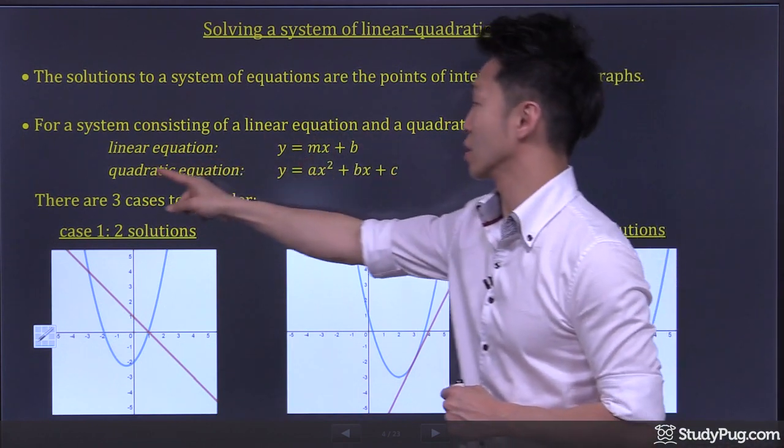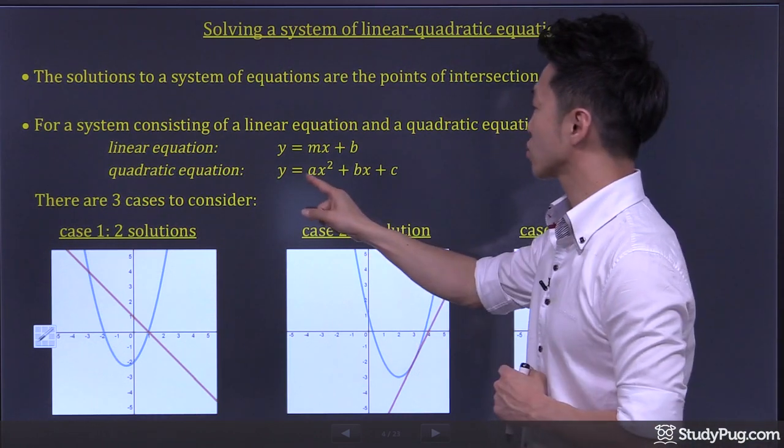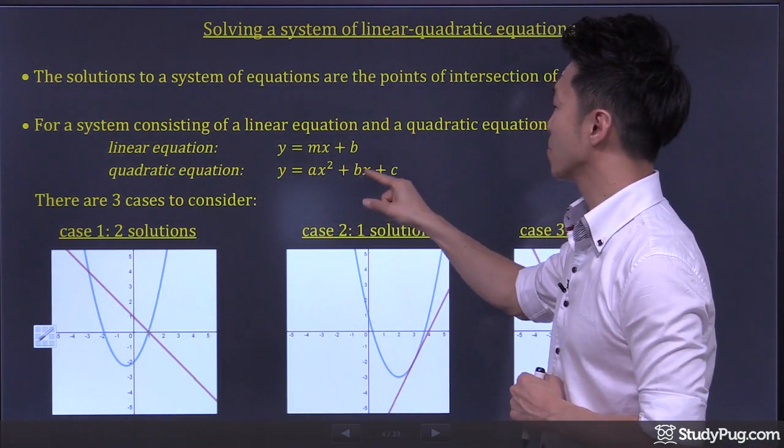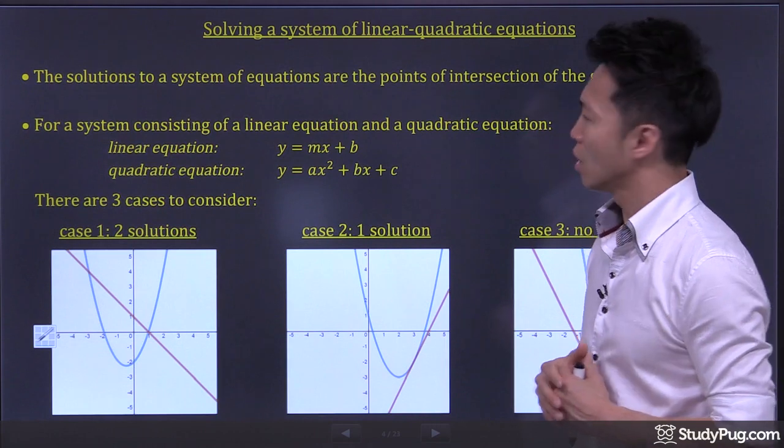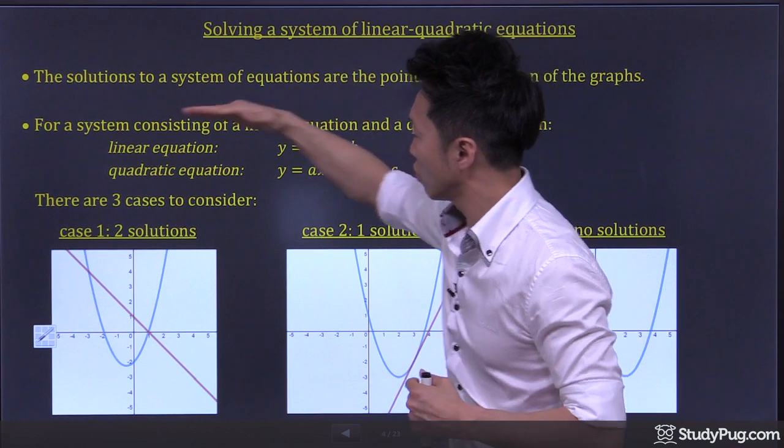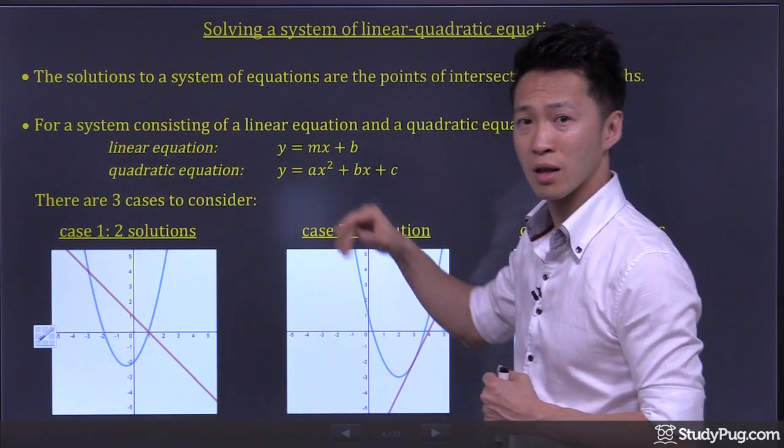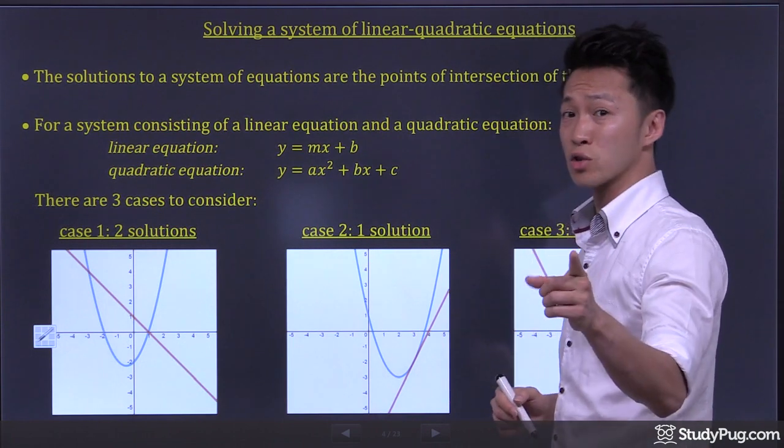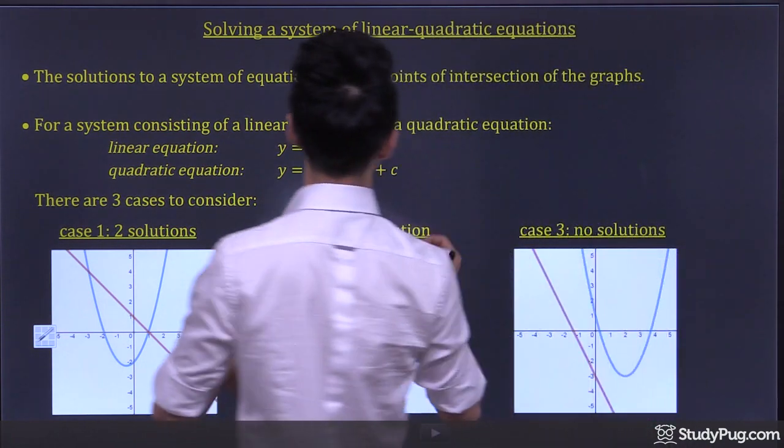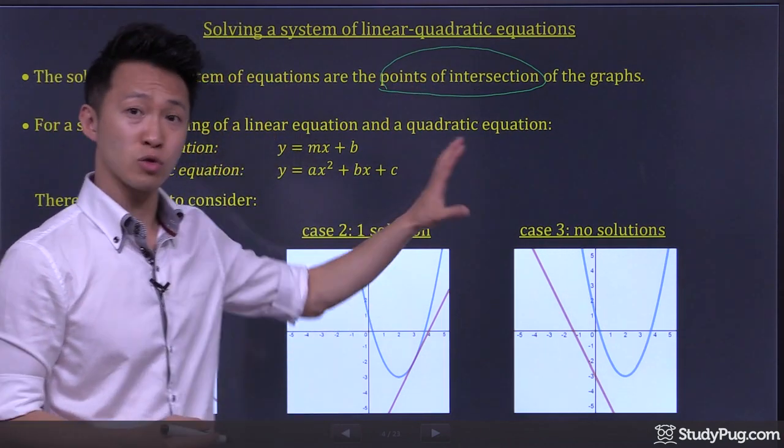And one way to represent a quadratic equation is the general form, y equals ax squared plus bx plus c. So for a system of equations consisting of a linear equation and a quadratic equation, the solutions to the system are the points of intersection of those two graphs.